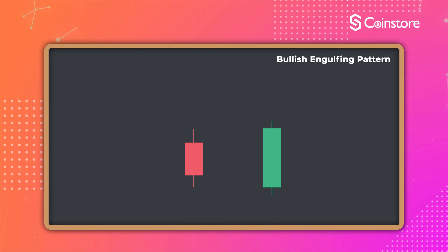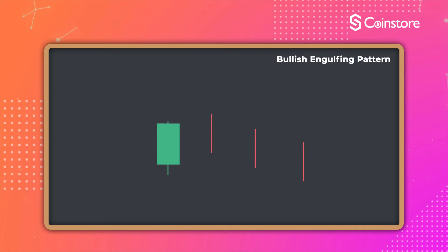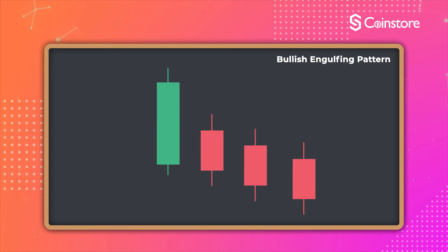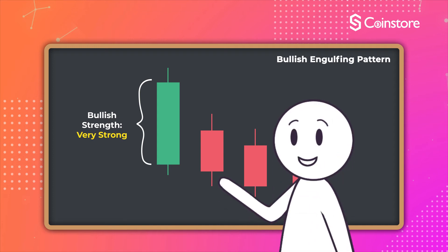When the body of the green candle is significantly higher than that of the previous red candle's body, or even double its size, this indicates that the bullish strength is strong. When the body of the green candle engulfs many red lines in front of it, this means that the bullish strength is very strong. As illustrated in the figures, the green line does not have to completely engulf the shadow of the previous red candles. Just like the Morningstar pattern, the bullish engulfing pattern looks different in the actual market.